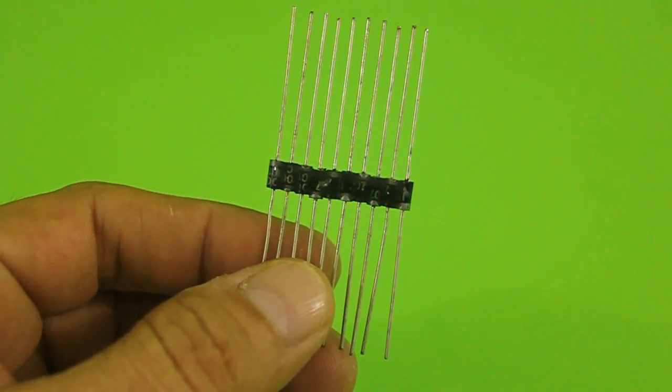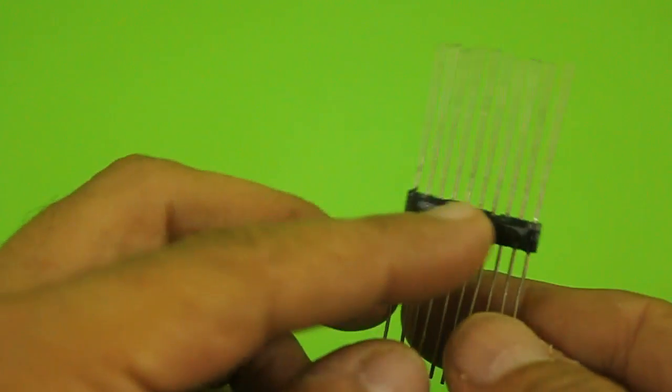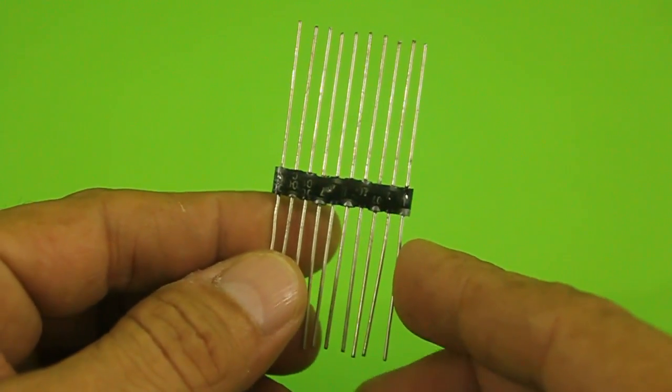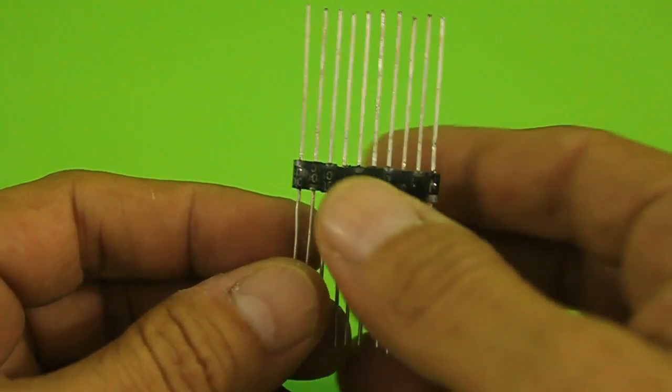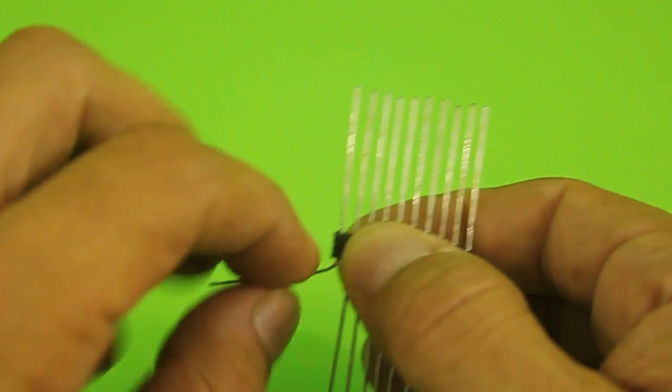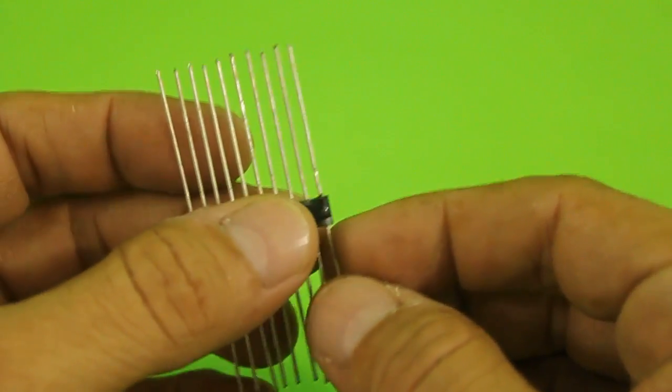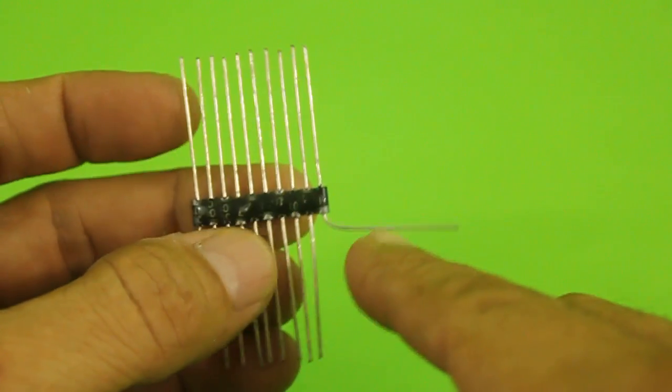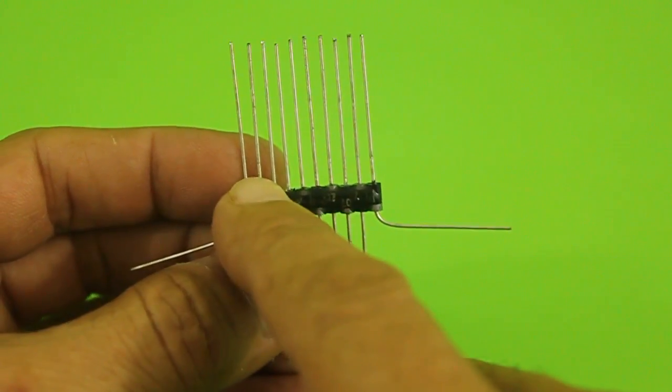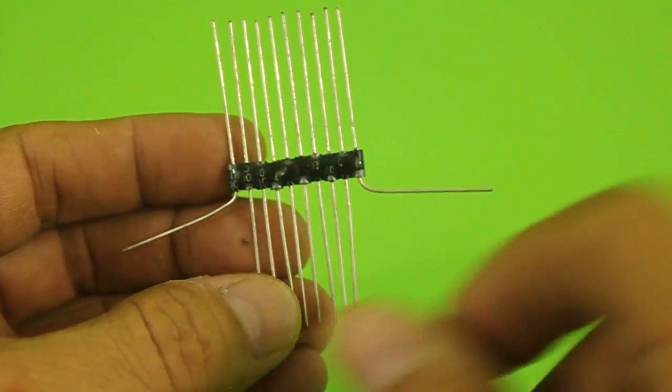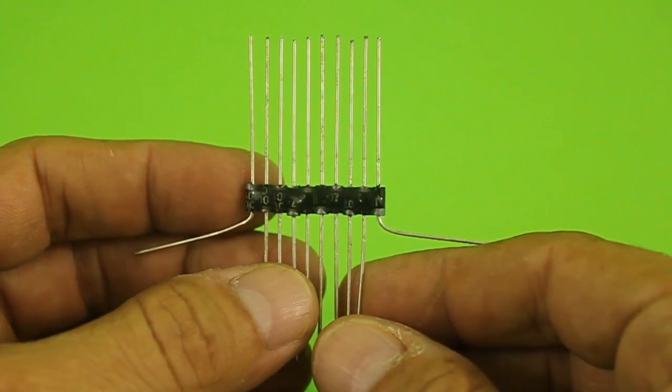Now that the glue is dry on both sides we have to connect all the diodes in series. For this, bend the positive terminal of the first diode and the negative of the last one and cut all the remaining wires at a distance of around 3 to 4 millimeters.